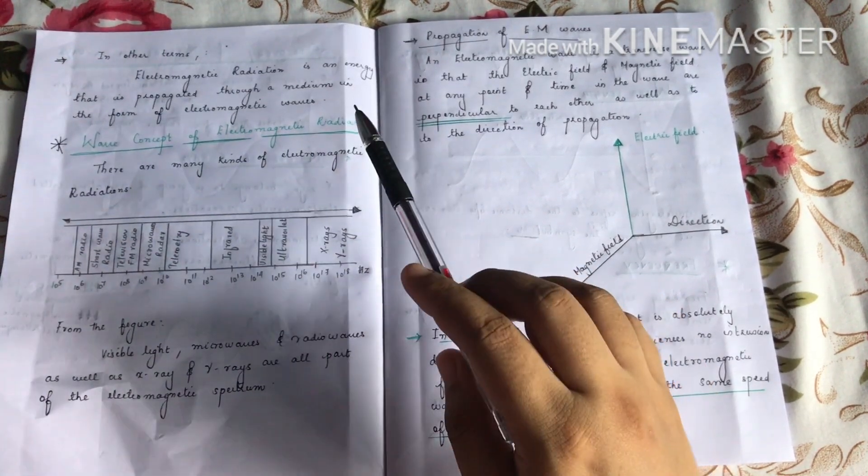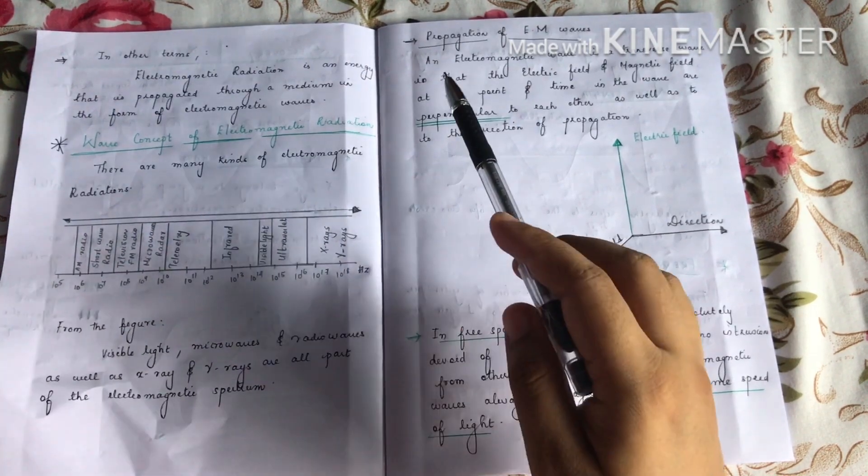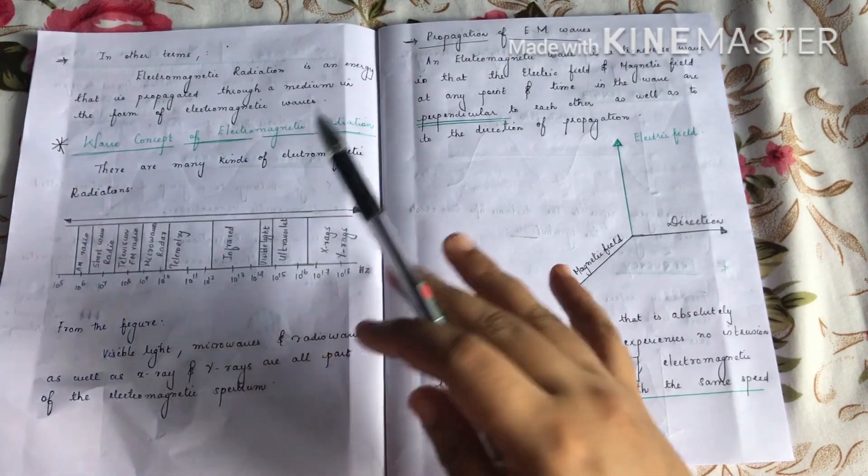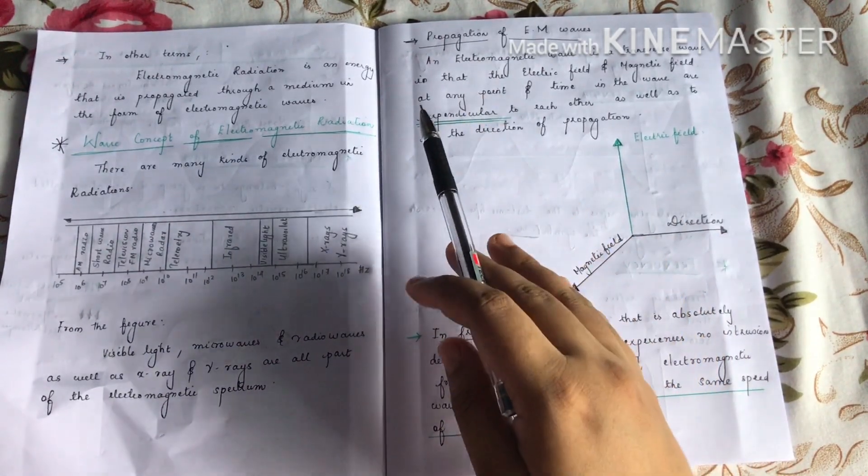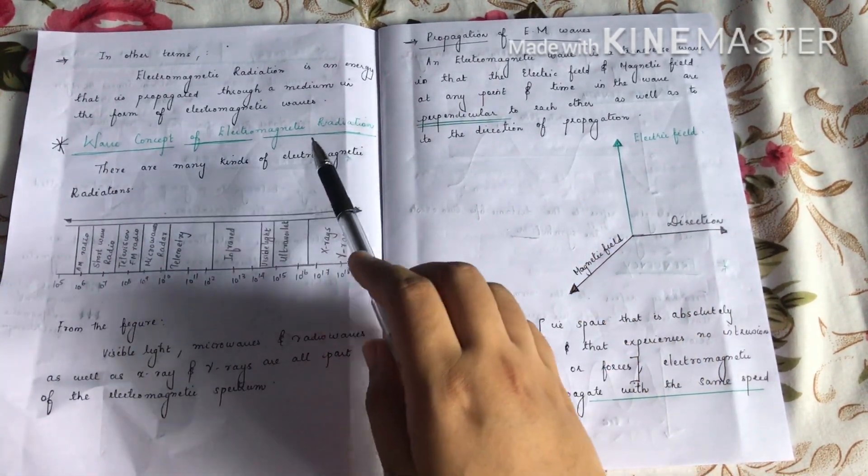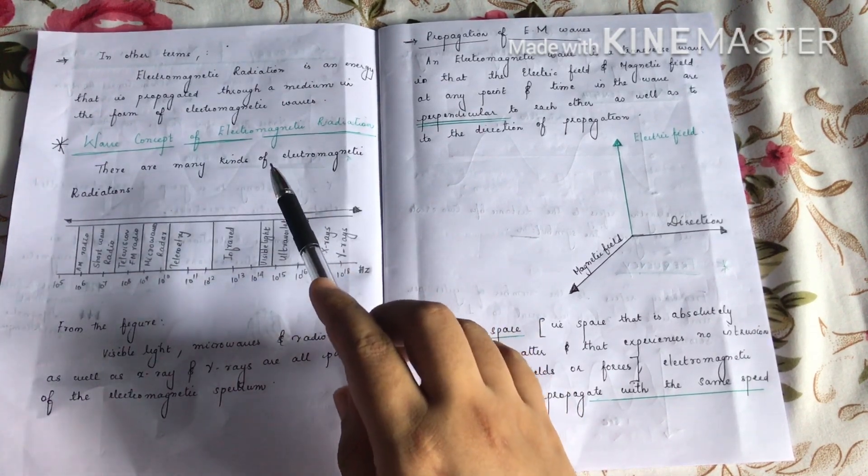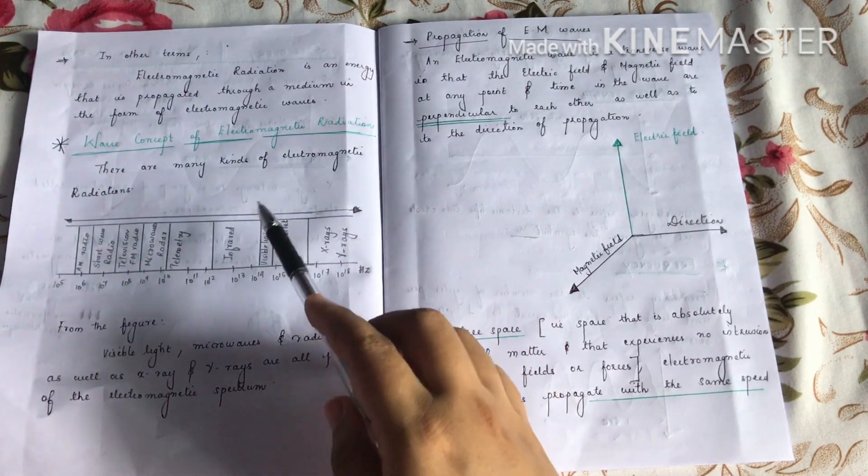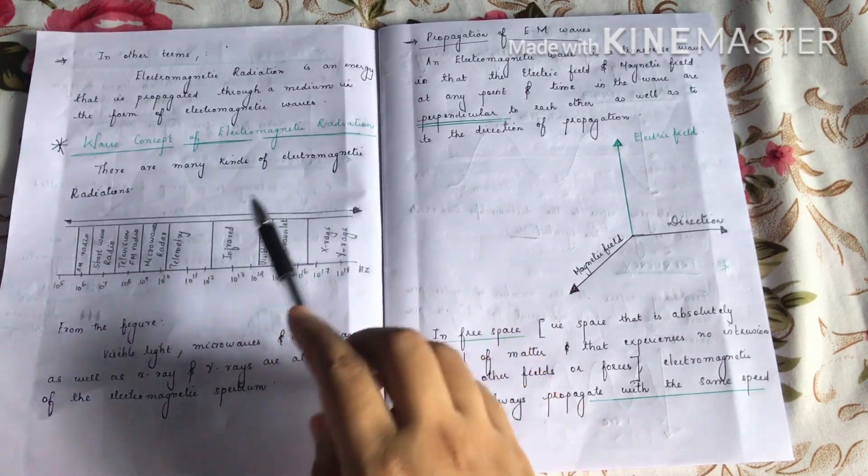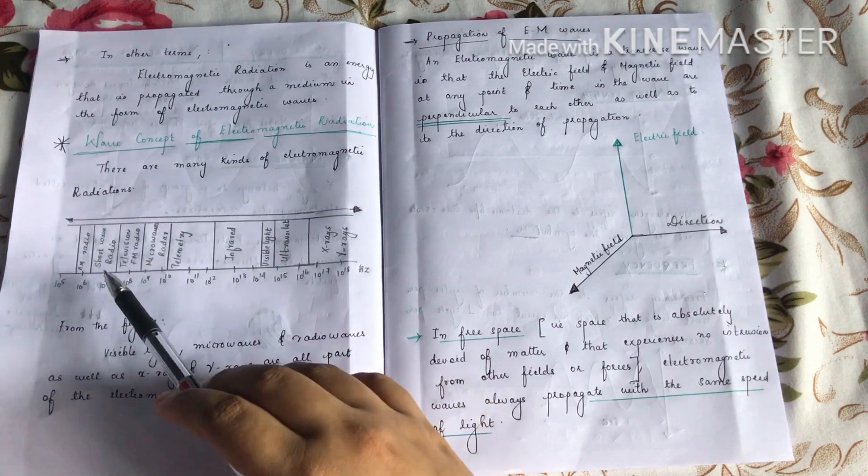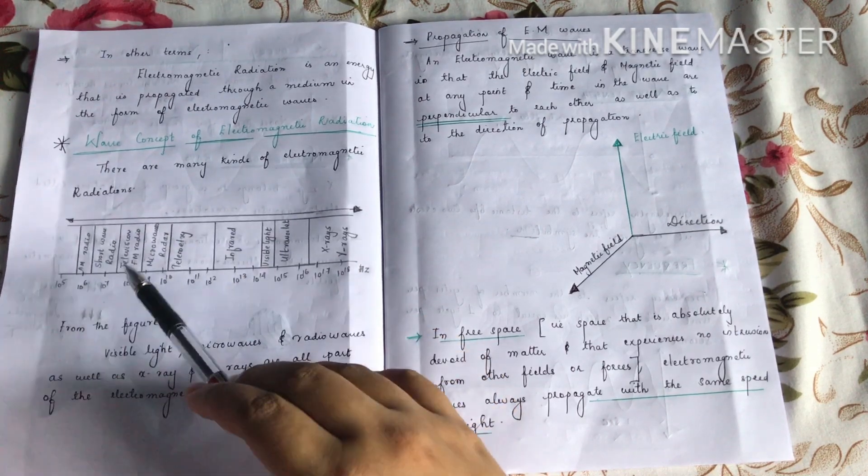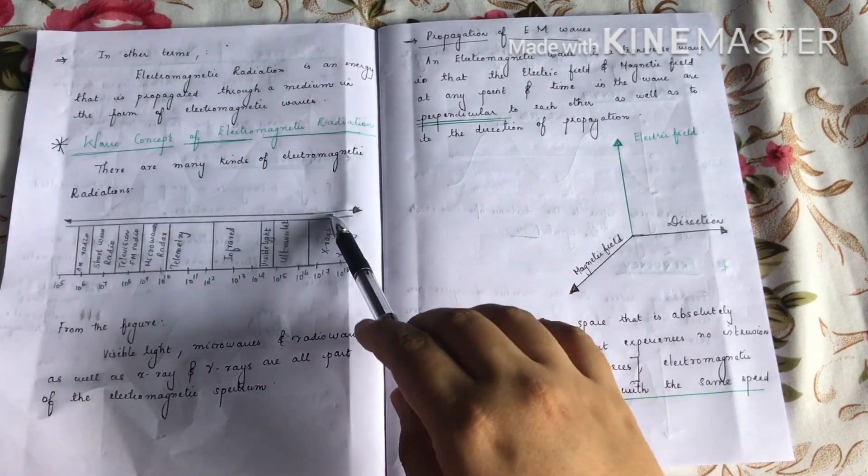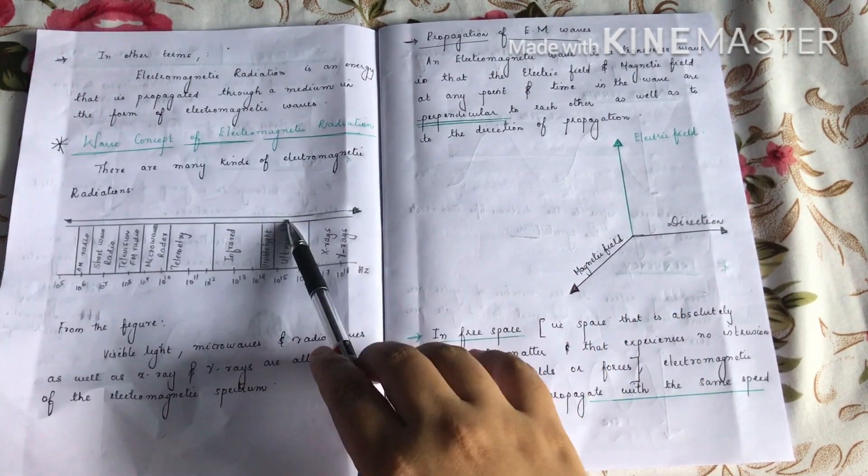So electromagnetic radiation has a dual personality: it has a wave form and it has a particle form. First, the wave concept. There are many kinds of electromagnetic radiation. From this figure: radio waves, television waves, infrared, visible light, ultraviolet, X-rays, and gamma rays. They are all part of the electromagnetic spectrum.